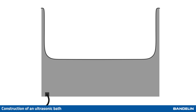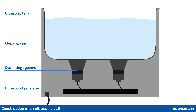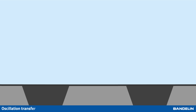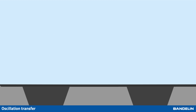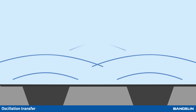An ultrasonic cleaner consists of an ultrasonic tank filled with a cleaning agent, oscillating systems, and an ultrasound generator. When the ultrasound is activated, the generator supplies the oscillating systems with electrical energy, which transfer the oscillation to the cleaning fluid.